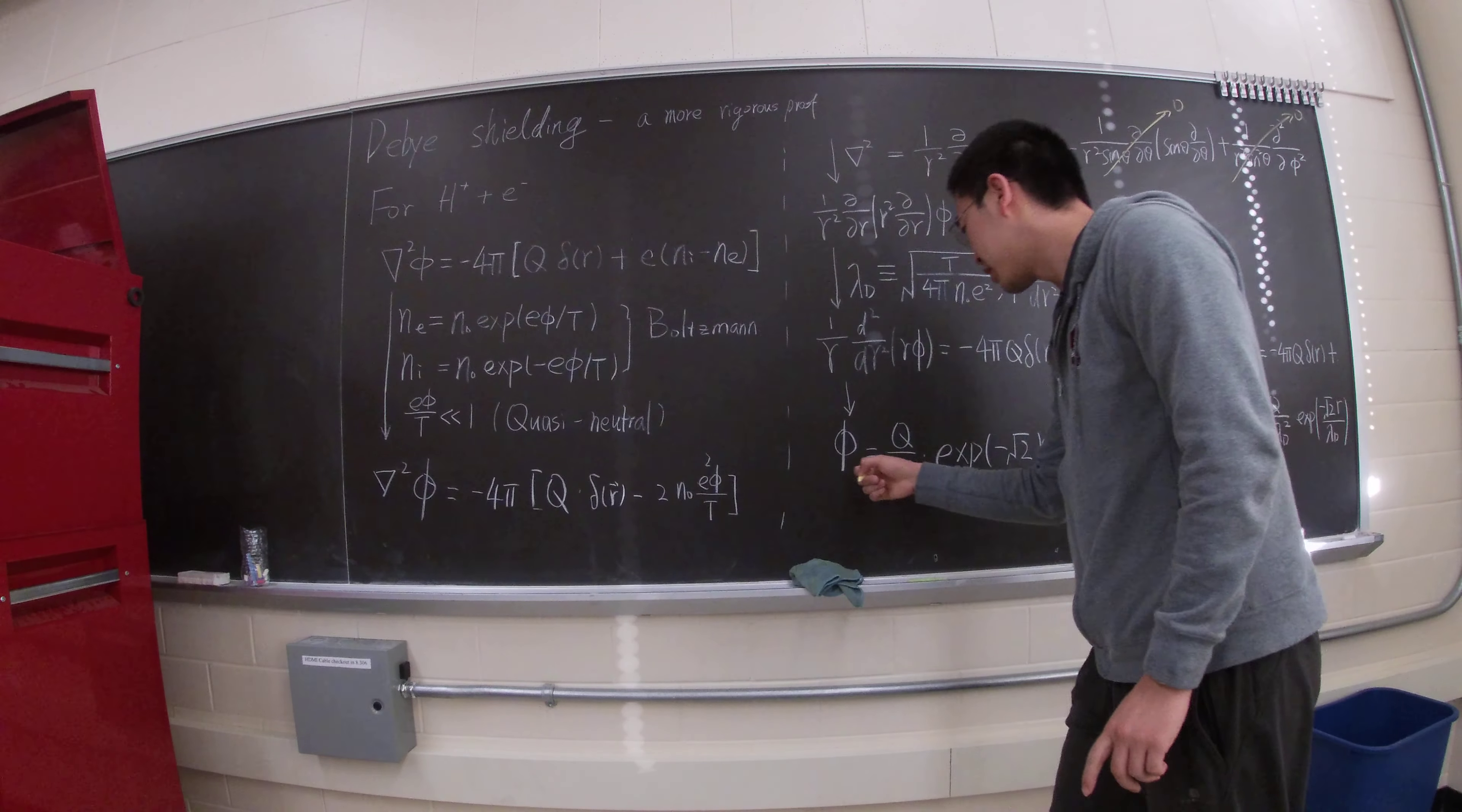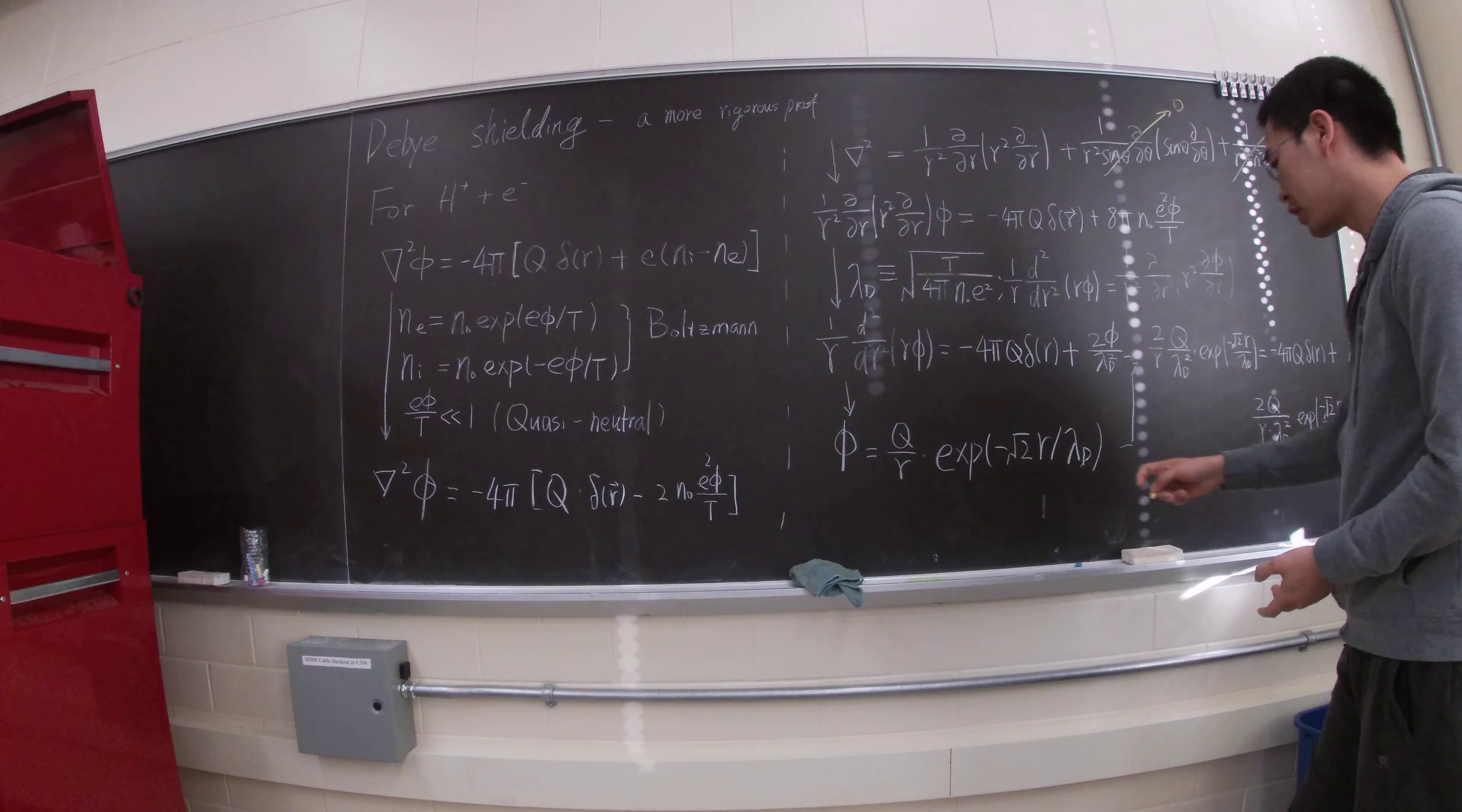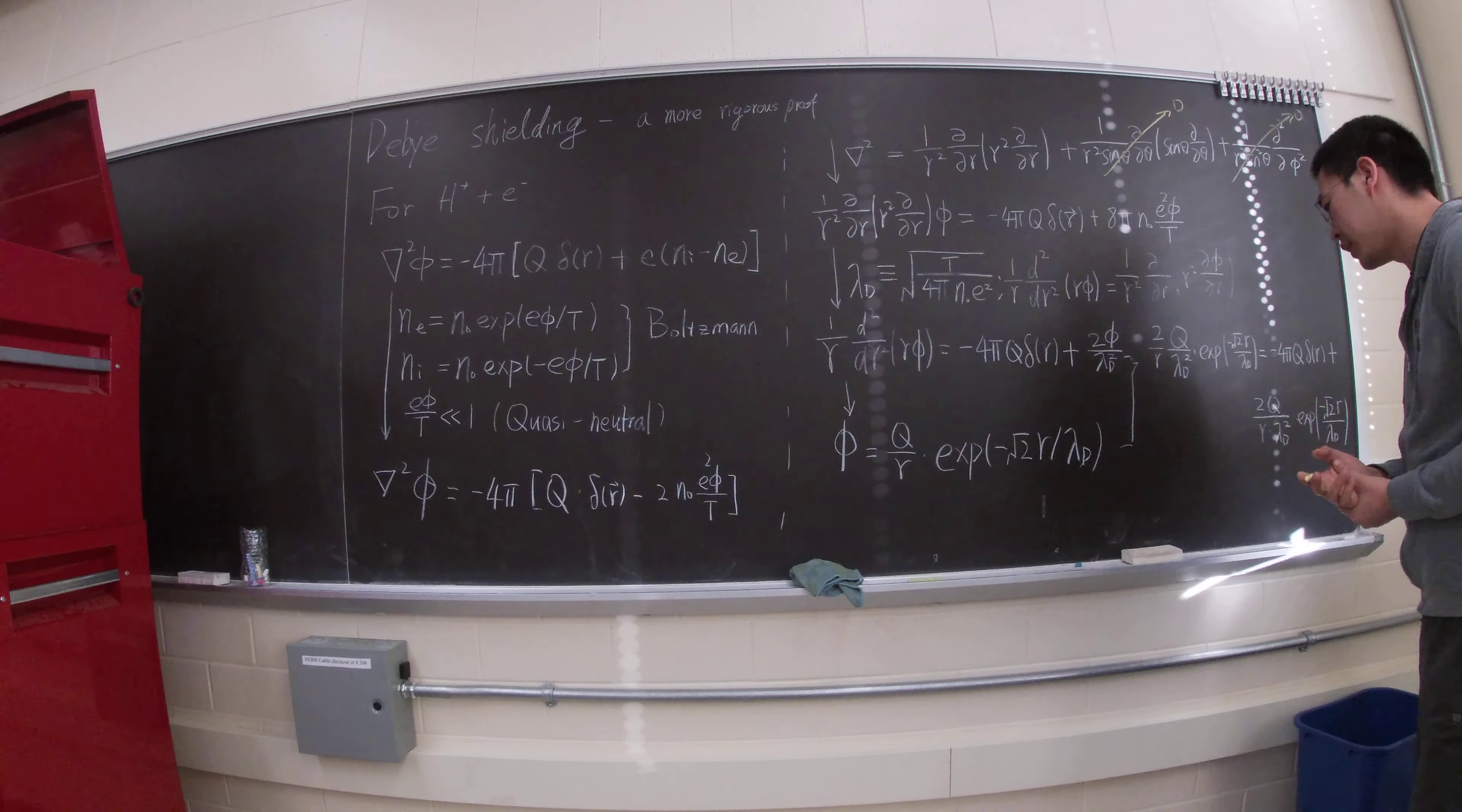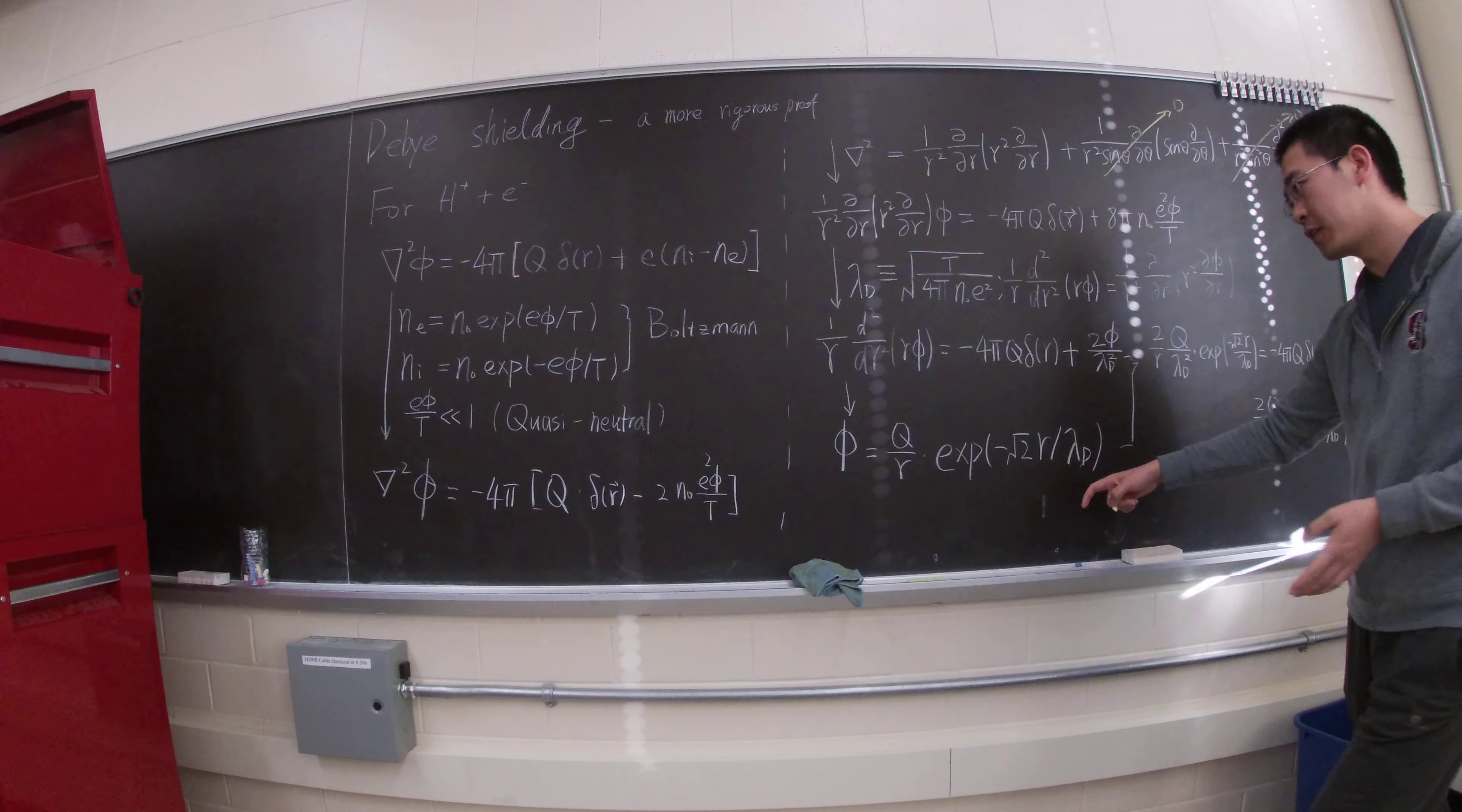So, the solution, let me just tell you that the solution will be phi equals q over r exponential negative square root 2 r over lambda_d. So, this solution can be checked relatively simply by just plugging this into here.